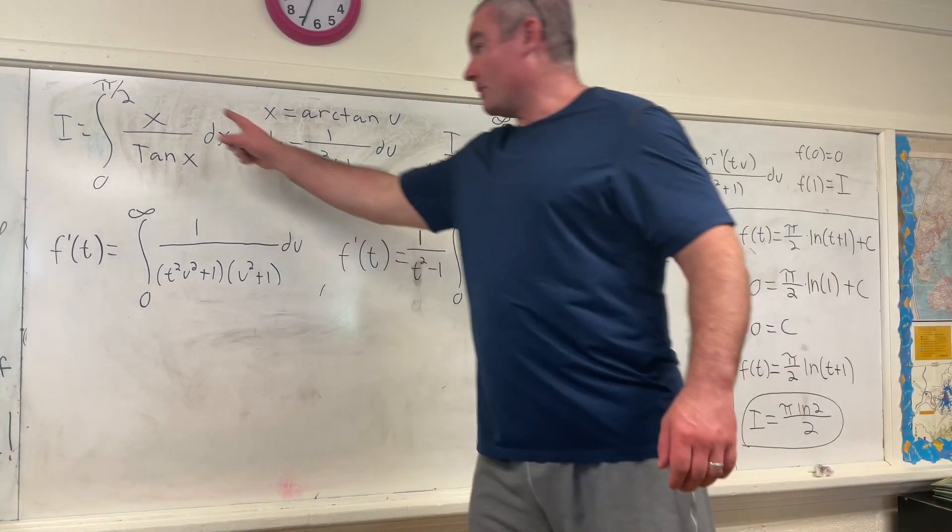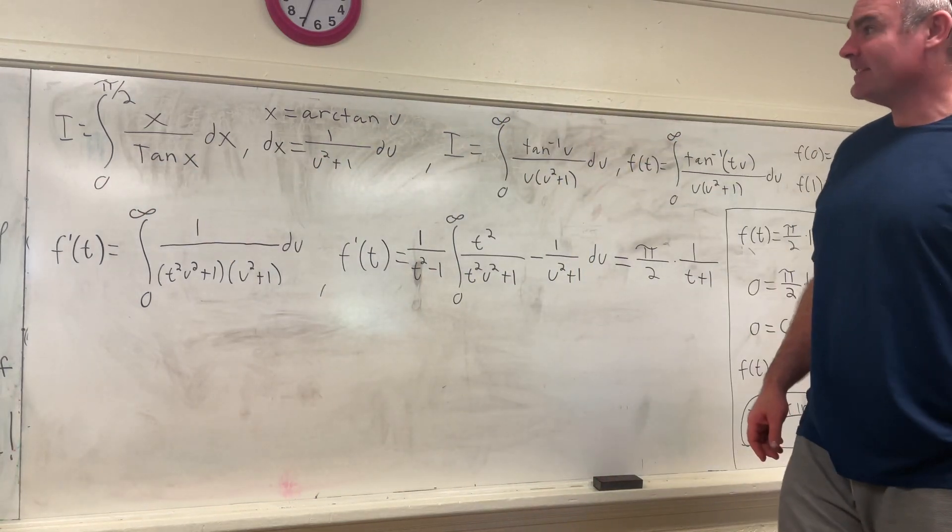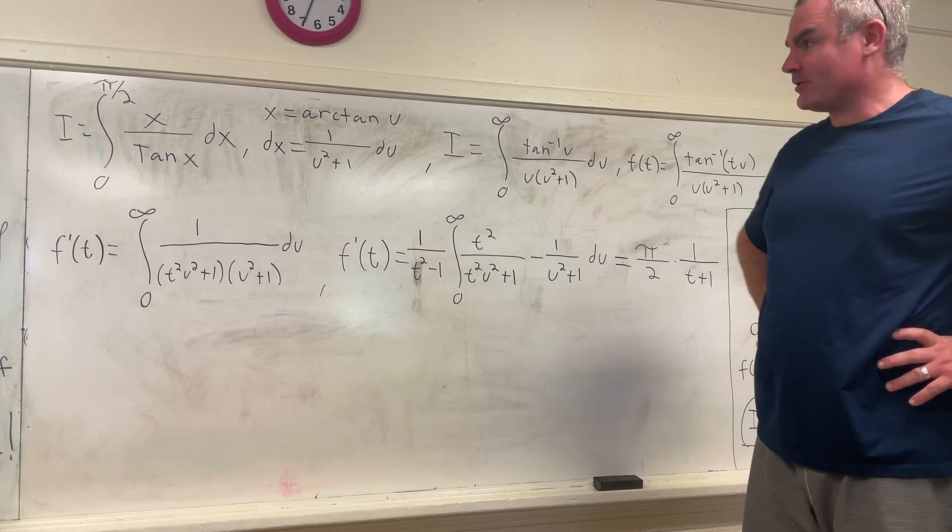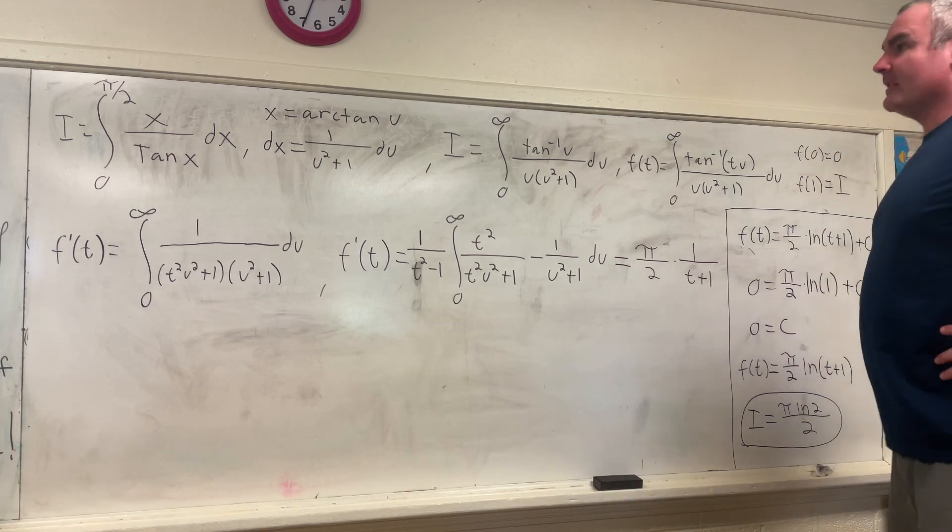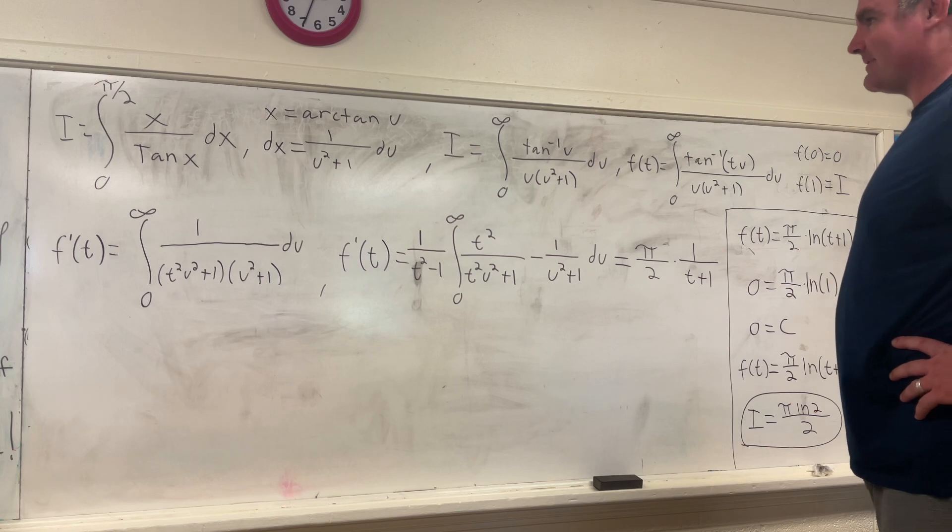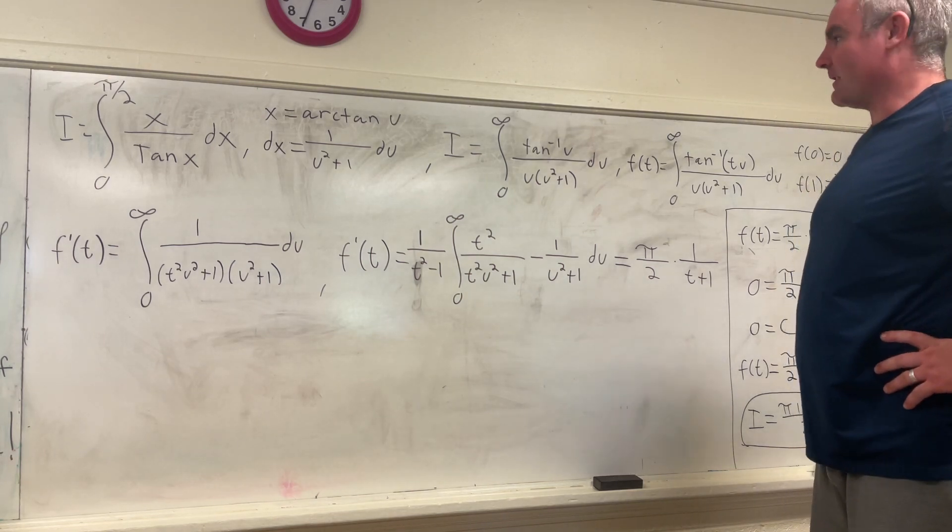So the integral is right here. The integral from 0 to pi over 2 of x over tangent x dx. And I originally tried to solve this from scratch, unedited, using King's property. And it proved just a little bit too complicated and messy. So I decided to try Feynman integration. And it worked out pretty nicely.